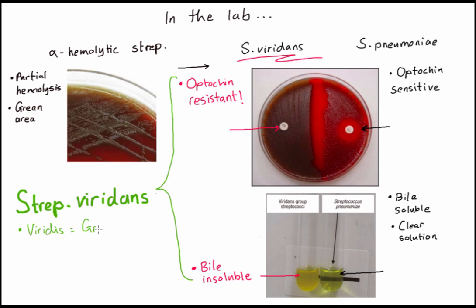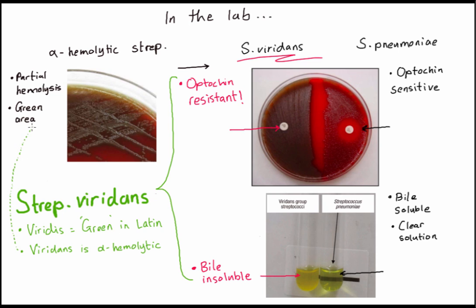A few cool facts: 'viridis' is the Latin word for green, and this color green is very important for remembering all the facts about Strep viridans. Strep viridans is alpha hemolytic, and alpha hemolytic is color green — so this is the first green fact about Strep viridans.